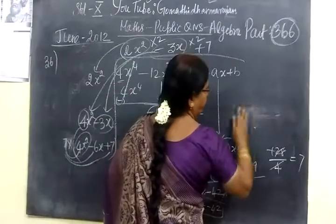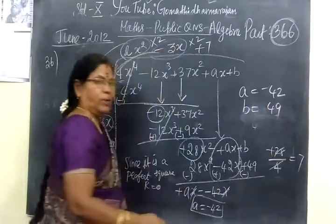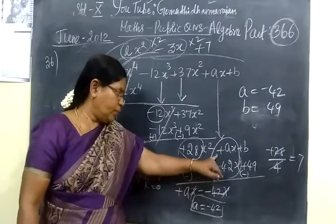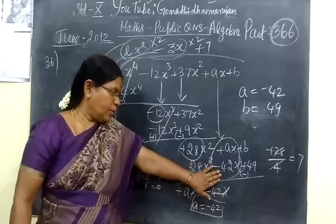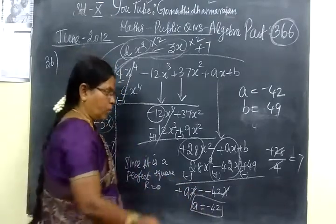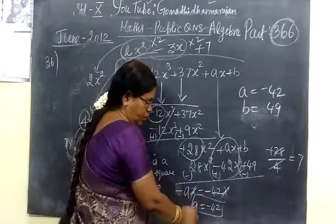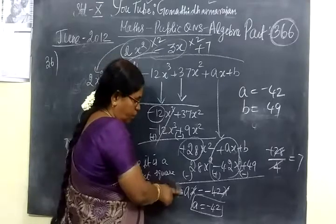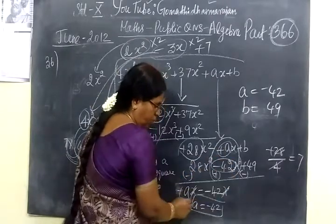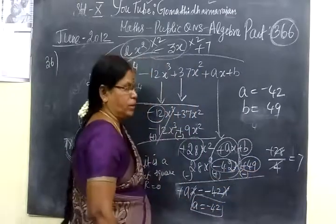So the value of a equals minus 42. Then b equals 49. The minus here gives a equal to 42. When you take a with the sign, if a equals the value with the sign, that is the answer. We complete that — that's ax plus b, that's ax plus 49.